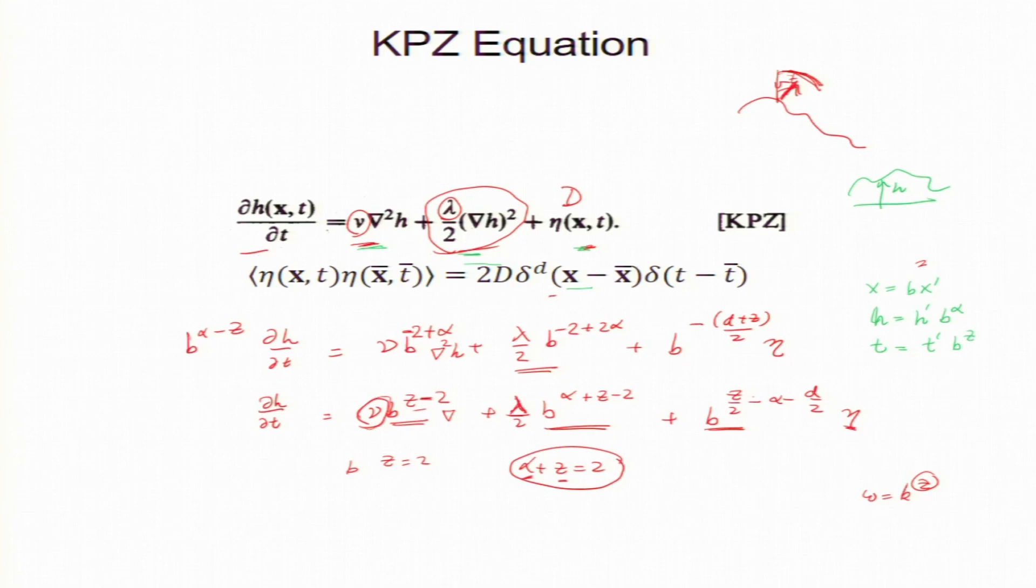So, these are three parameters alpha z and d is a dimensionality of the space. If it is 2D surface then it is 2, if it is 1D surface. So, if it is growing in this room then it is d equal to 2.